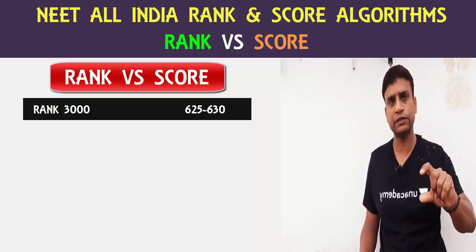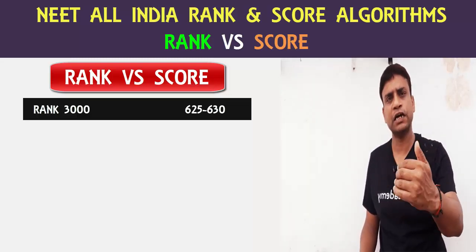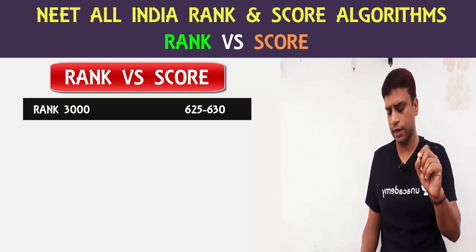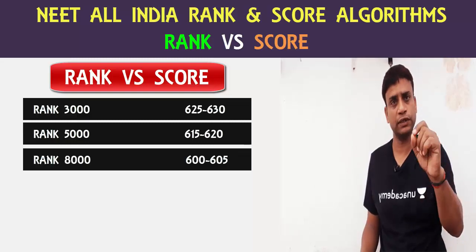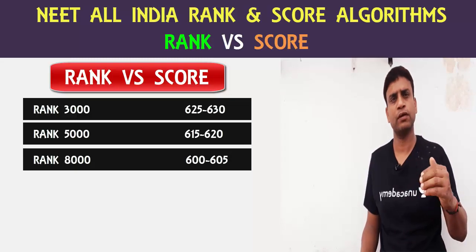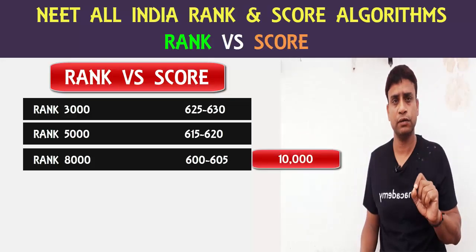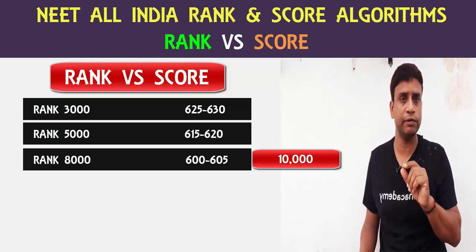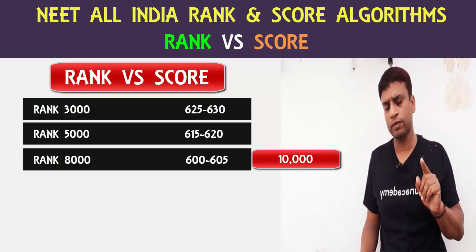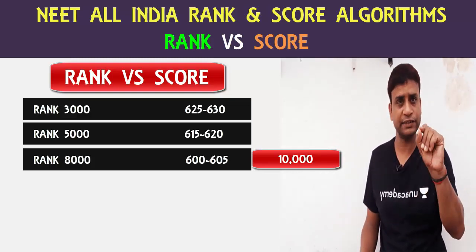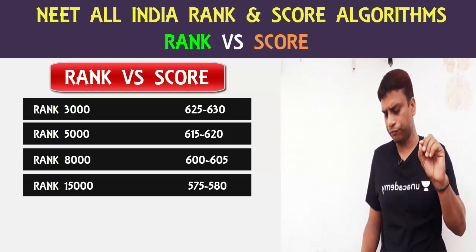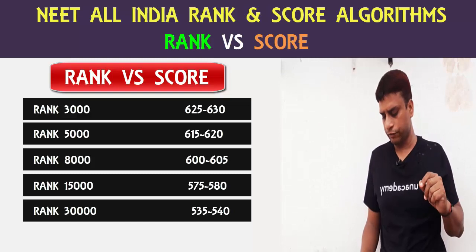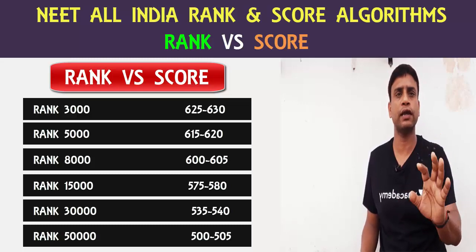As you can see, marks and ranks correlate closely at the top. A score of 627 corresponds to around Rank 3,000. A score of 621 is around Rank 6,000. A score of 614 is around Rank 8,000, and around Rank 10,000 corresponds to about 617 marks. For All India Rank 15,000, the score is above 575. Rank 30,000 corresponds to 535 marks. Rank 50,000 corresponds to 500 marks, and 60,000 All India Rank is also around 500 marks.